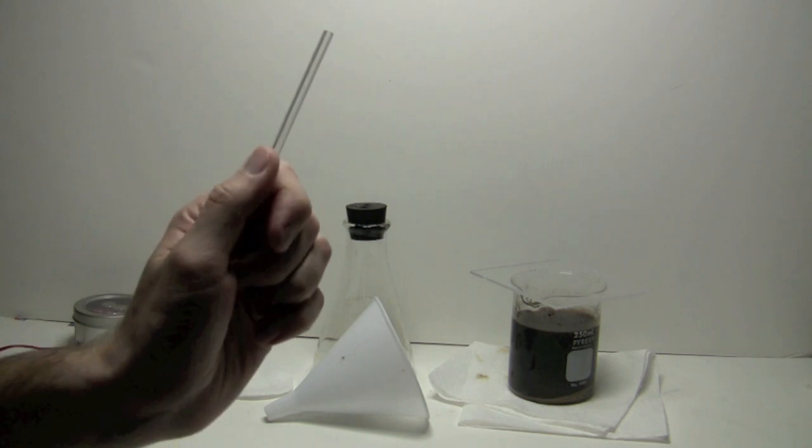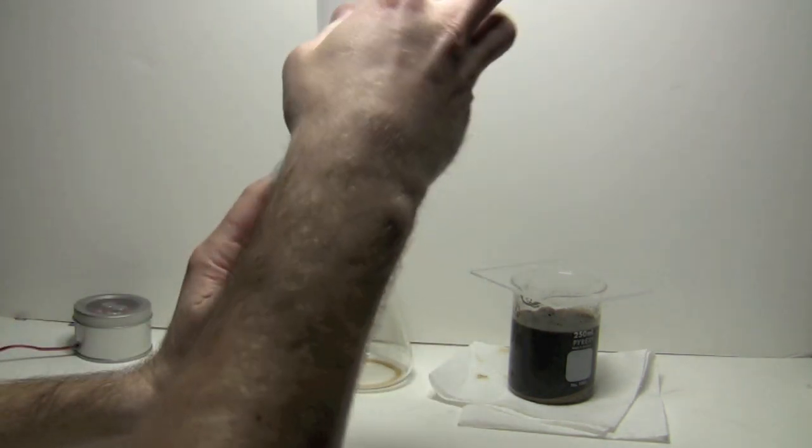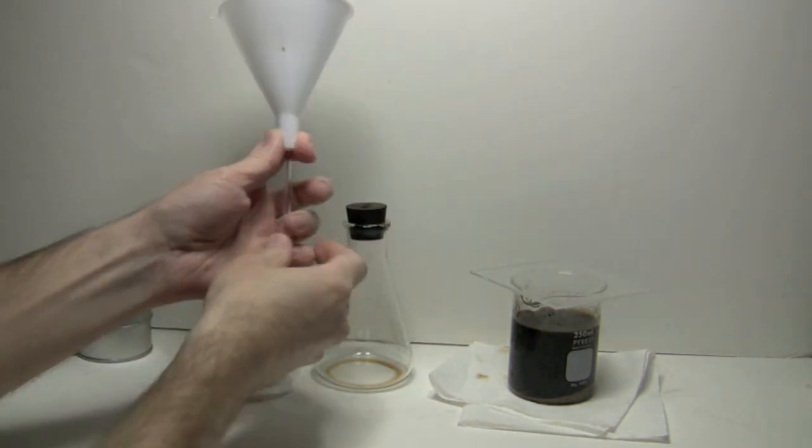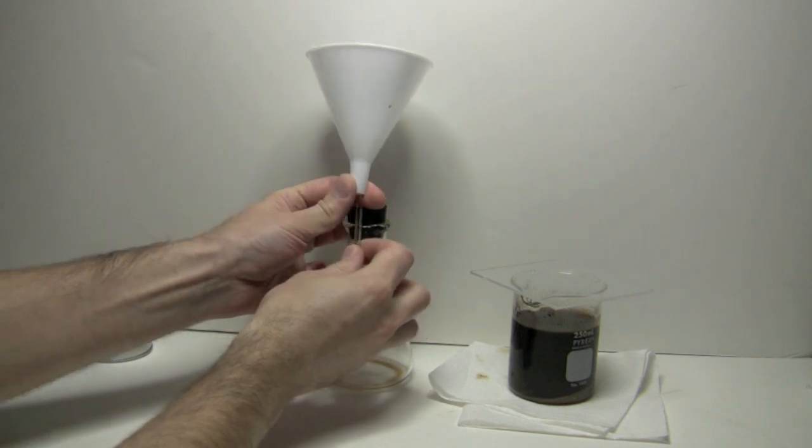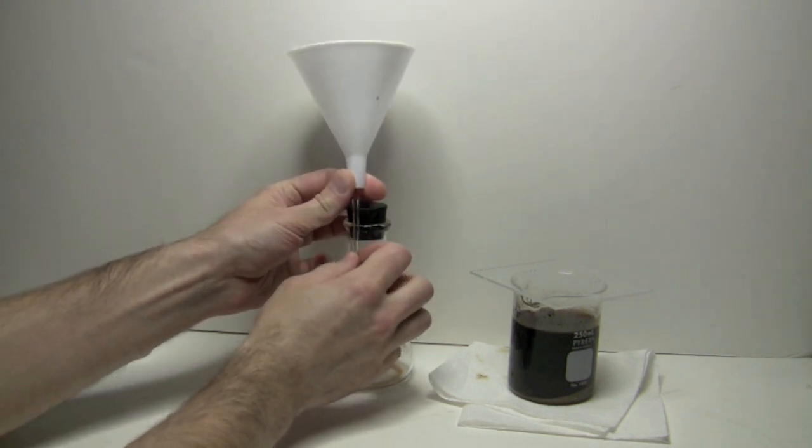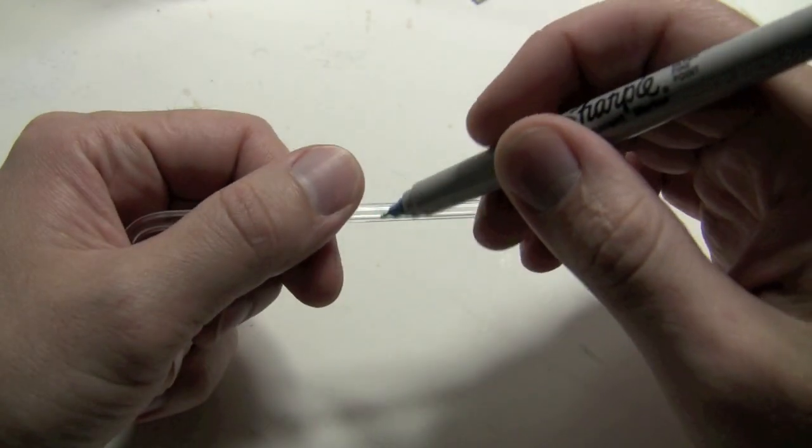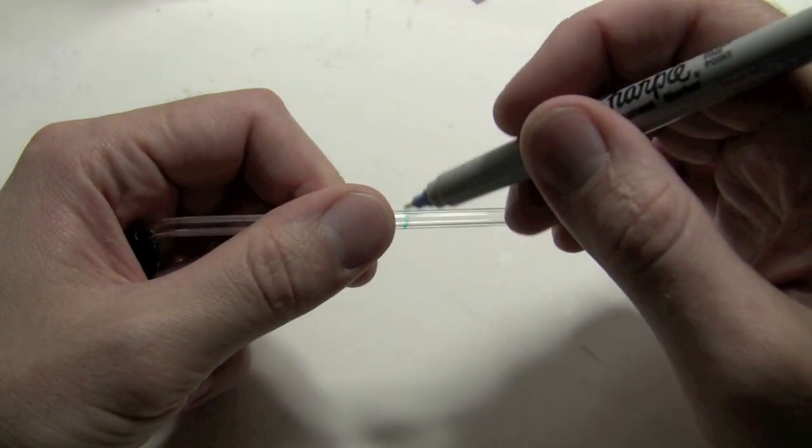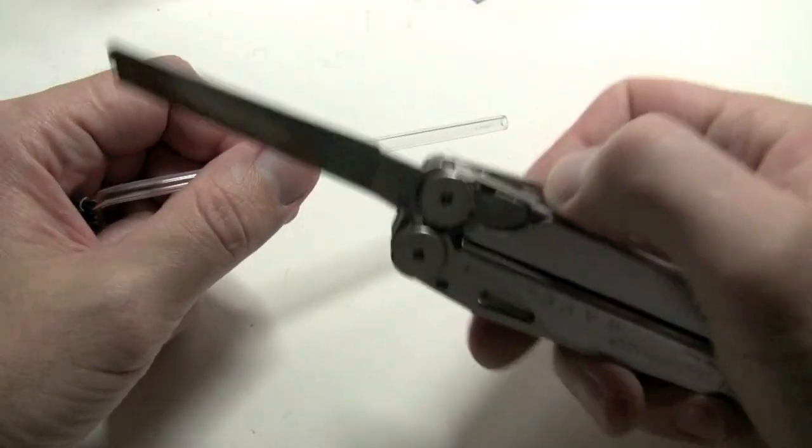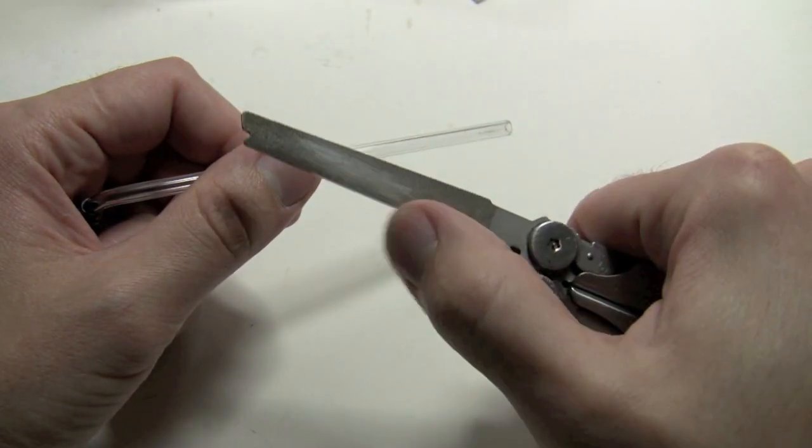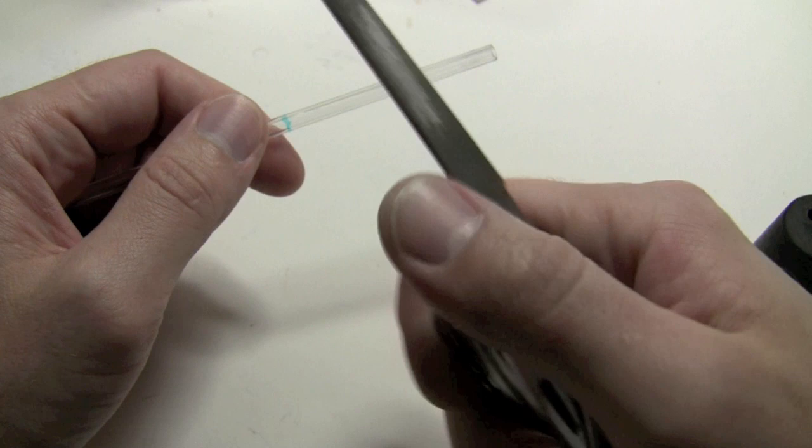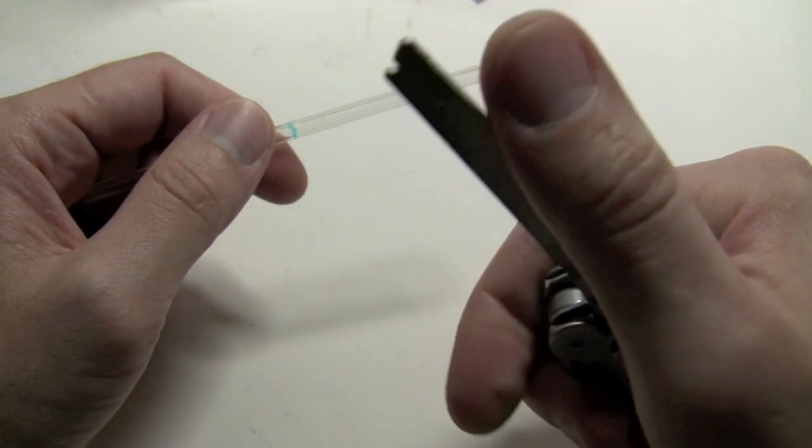This glass tubing will help me attach the funnel to the stopper. It has to be long enough to go through the funnel neck, rubber stopper, and make it all the way into the flask. Let's cut the glass tubing of appropriate size. For instance, I need to cut it right here. I'll use the diamond file from the super tool to do that. But regular glass cutter will work just as well.